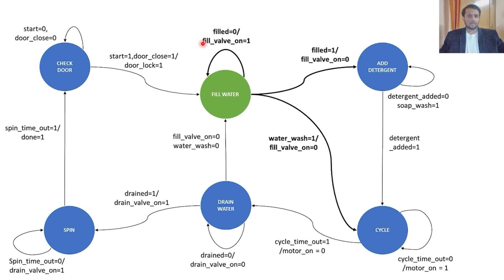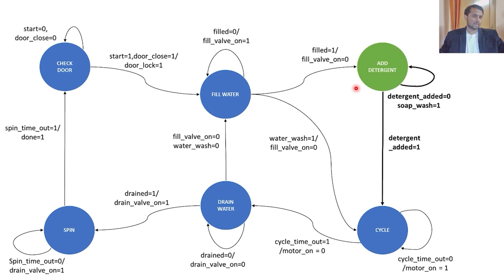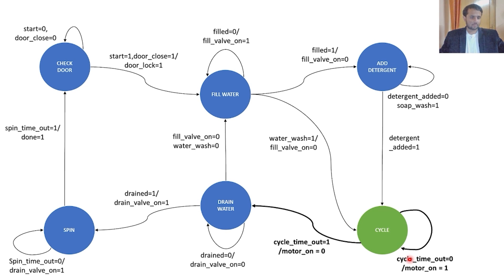Once the door is closed and the machine is started, we go to the fill water state. Until the water is not filled, we turn on the fill valve to give the water supply. If the soap wash is not done, we have to add the detergent and go through the add detergent state to the cycle state. If the soap wash is already done, we go directly to the cycle state for the water wash. In the add detergent state, we remain until the detergent is added, which also marks the soap wash step as done.